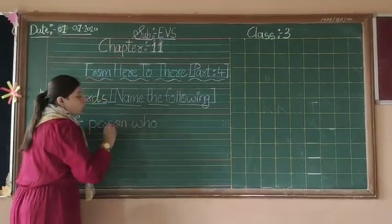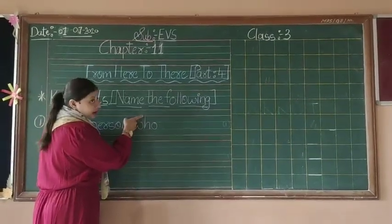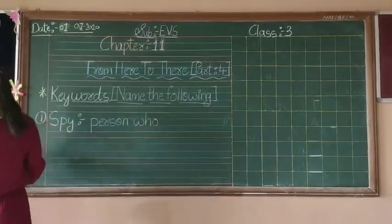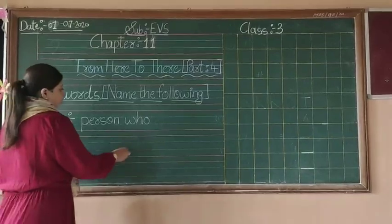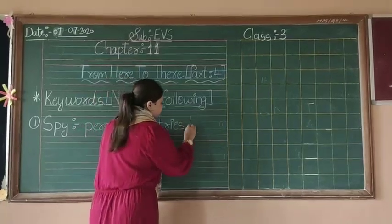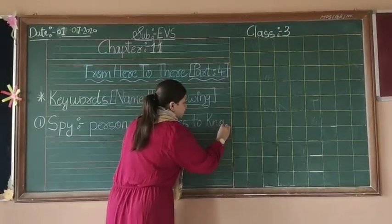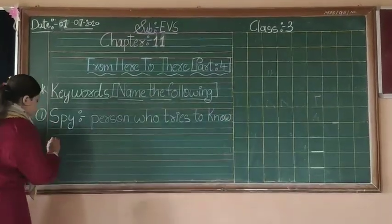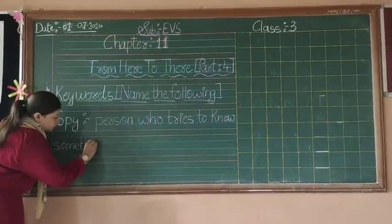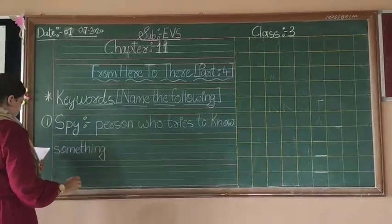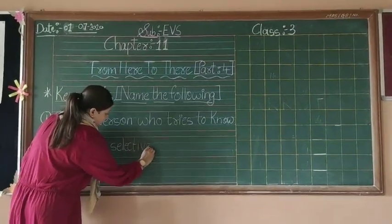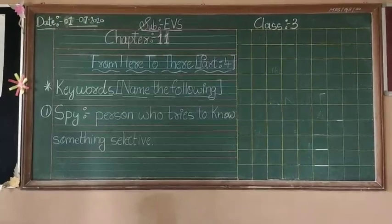W-H-O — always be careful: letters like H and P should not touch the red line going downward. The answer continues: person who tries — C-R-I-E-S — to know something. So the complete meaning of spy is: a person who tries to know something.